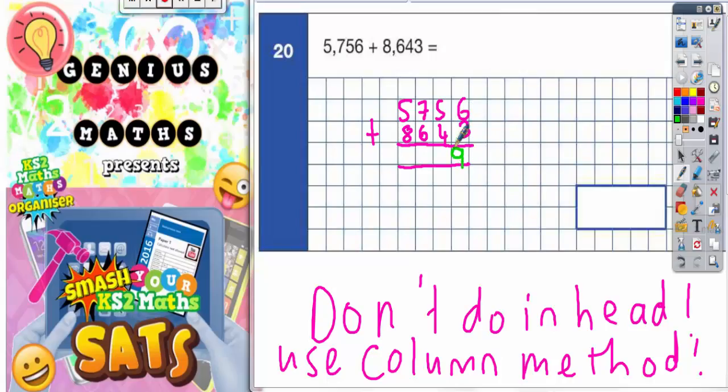6 plus 3 is 9. 5 plus 4 is 9 again. Nothing to carry so far. Nice and easy.